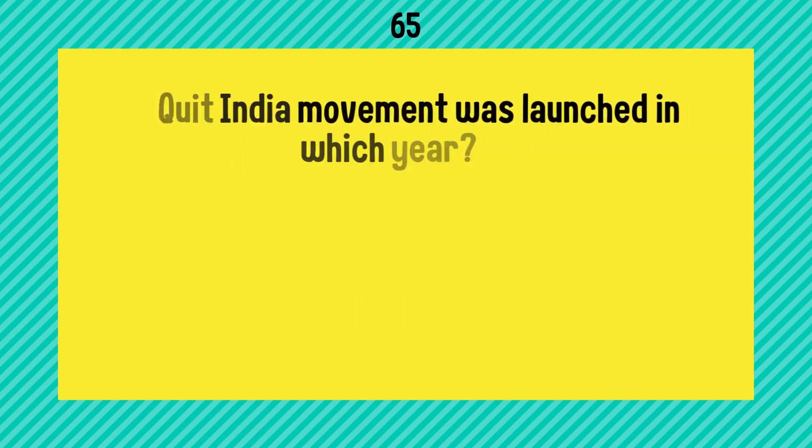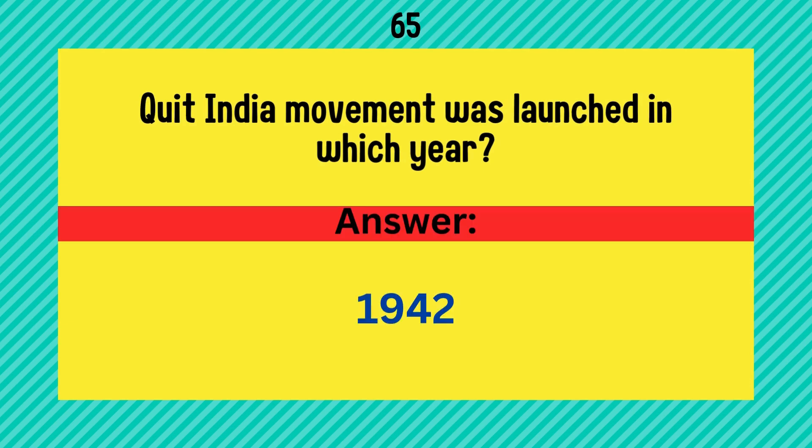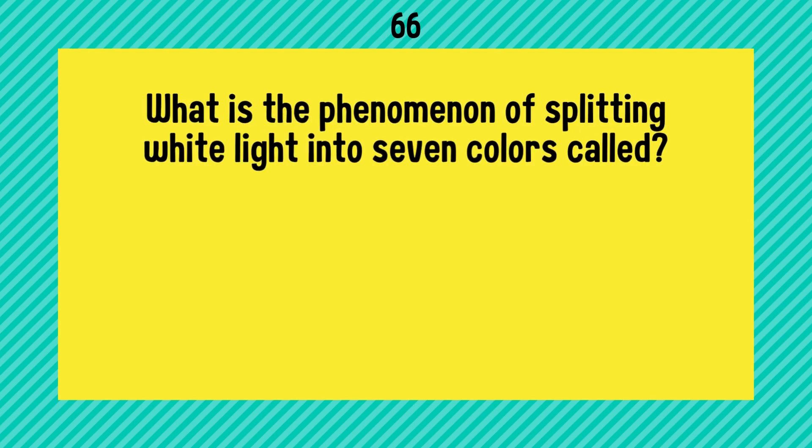Quit India Movement was launched in which year? Answer is 1942. What is the phenomenon of splitting white light into seven colors called? Answer is dispersion.